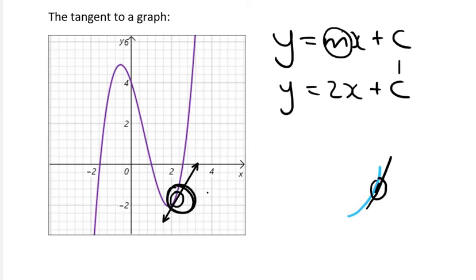To find c, you would substitute in an x and y. You could use the x and y where these two points are touching each other, because at the point of contact—let me draw that out again—we've got the graph and the tangent. At that point of contact they share the same x and y value.